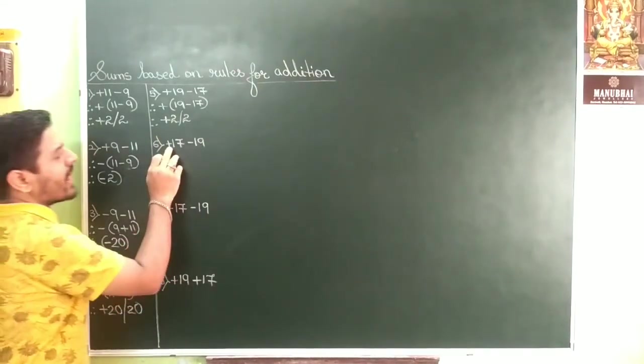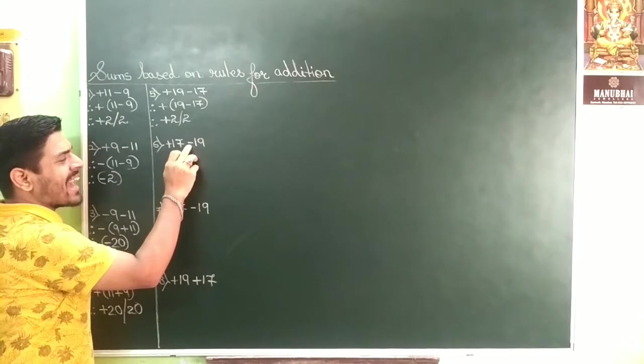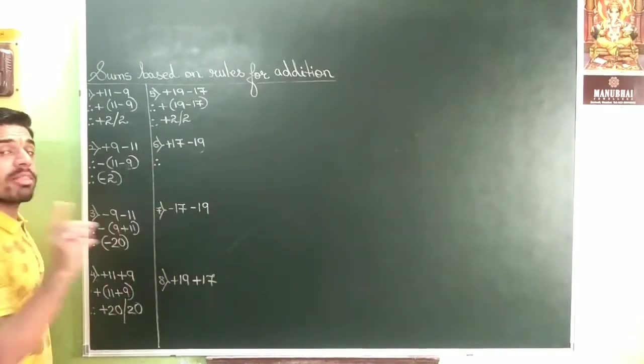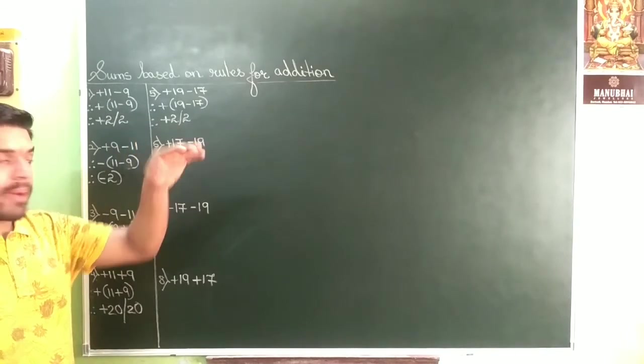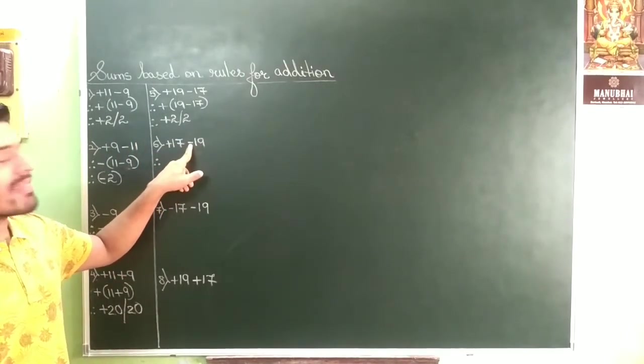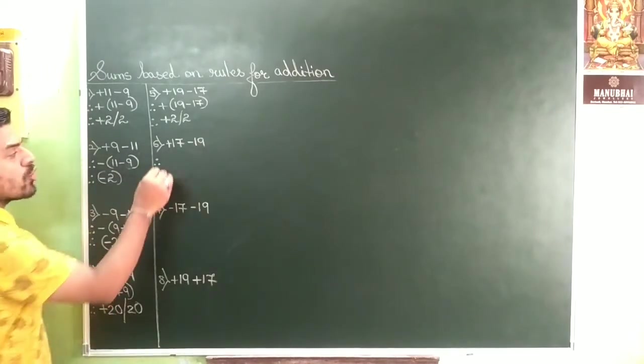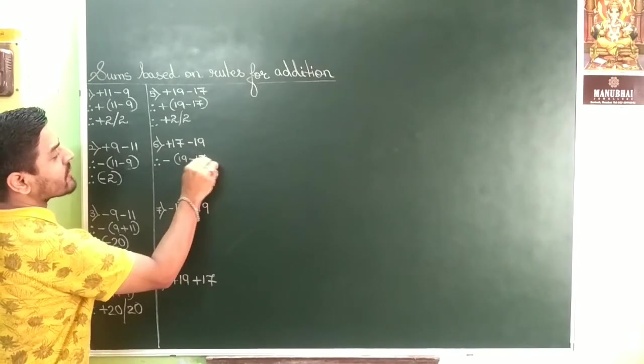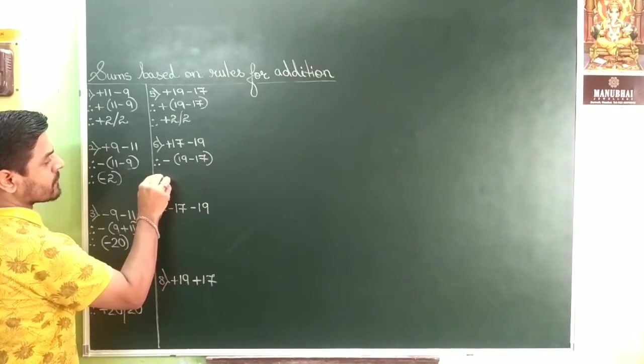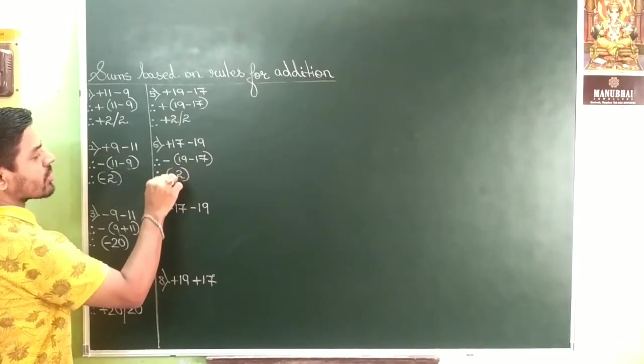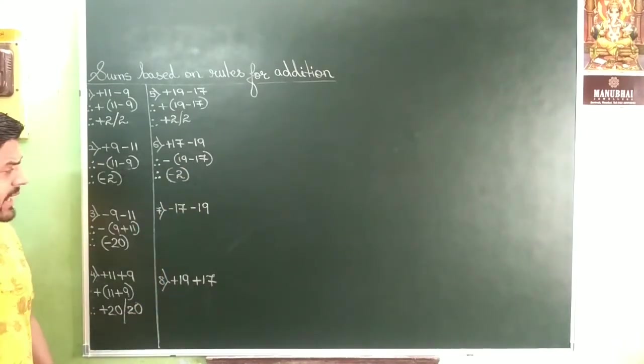Next question. When one number is positive and another number is negative, put the sign of the greater number. 19, you will put here a minus sign and always subtract the numbers. Negative 2. Simple. Next.